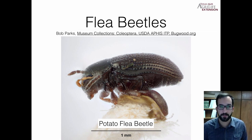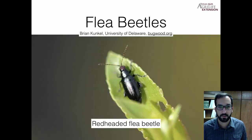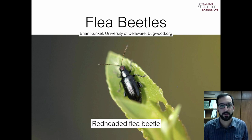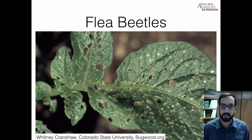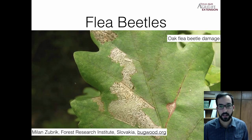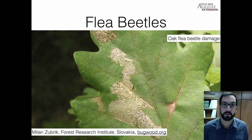Examples of flea beetles include the potato flea beetle — just over one millimeter in length — the striped flea beetle, and the red-headed flea beetle, which has become more of a problem in states such as Delaware, causing more damage in the nursery. Sometimes beetles can chew through only certain layers of the leaf rather than all the way through.